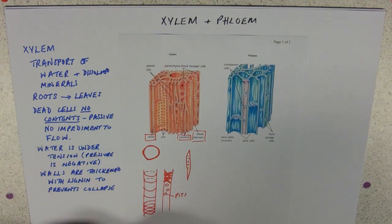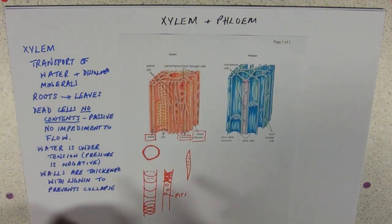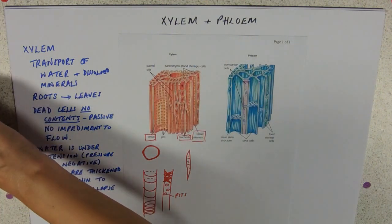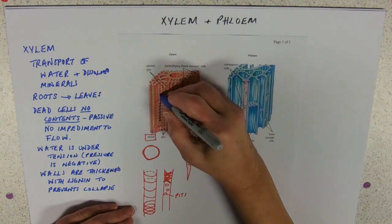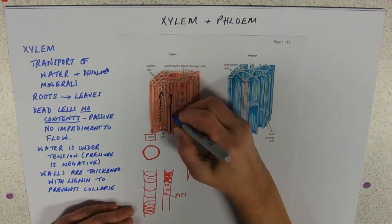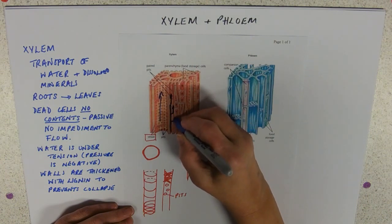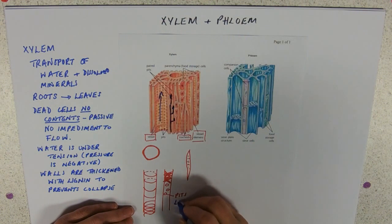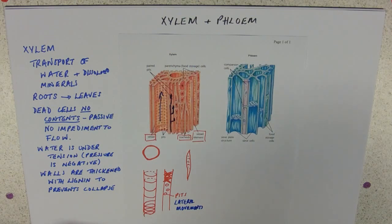Again, they are dead cells. And you can see that they have tapered ends that sort of button next to each other. So the water can go in this big vessel here, it's just going to go straight up. And in here it's going to have to go through the end walls. And it could possibly go off into another one through a pit. So these pits are allowing lateral movement. So the water's moving up, but it can also move a little bit sideways, maybe if there's an air blockage.